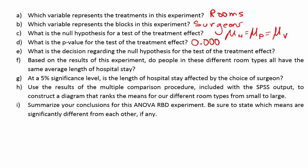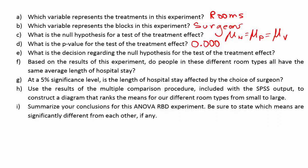Part E asks for the decision regarding the null hypothesis for the test of the treatment effect. Remember, if the p-value is smaller than our alpha, we reject the null hypothesis. Even though they didn't give us a significance level, we can assume our p-value is smaller than any significance level we'd actually use because the p-value is essentially 0. So we reject H0. Part F asks: do people in these different room types all have the same average length of hospital stay? We rejected the null hypothesis that said they're all the same, so the answer is no — the stays are not all the same.